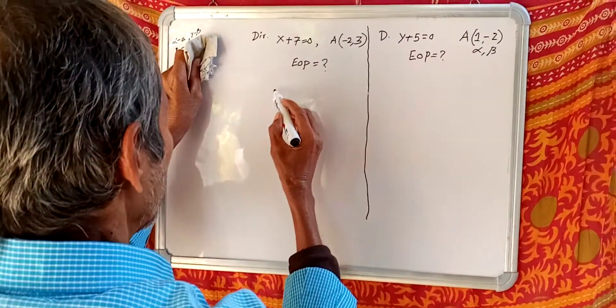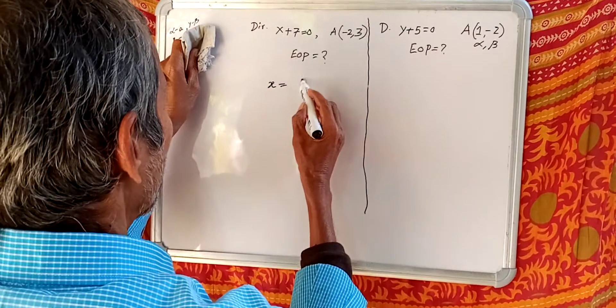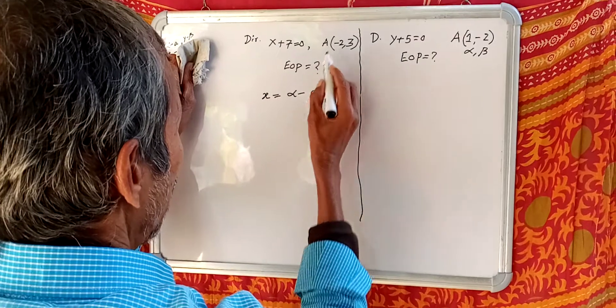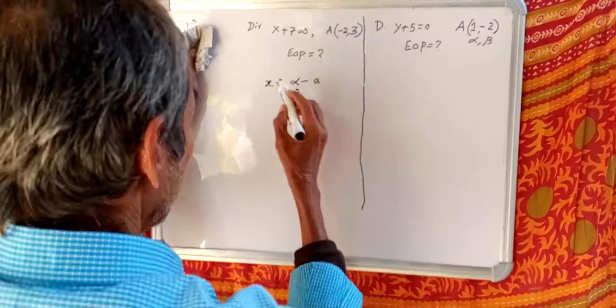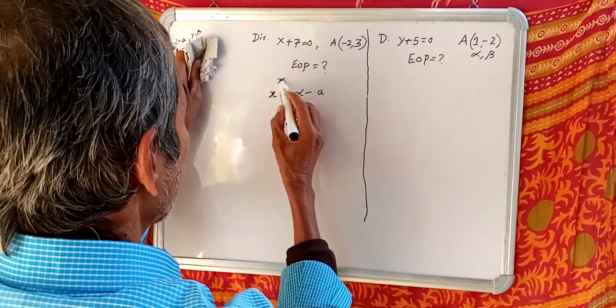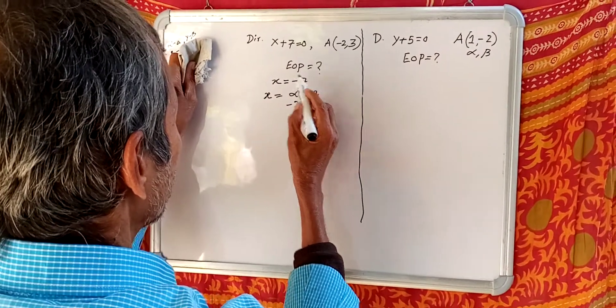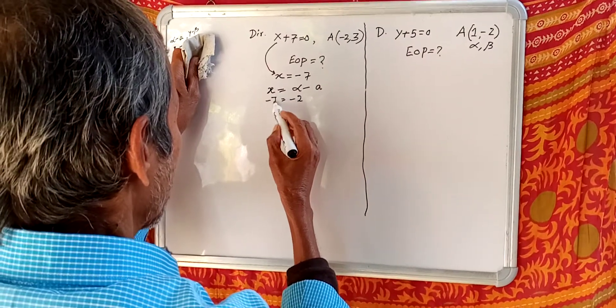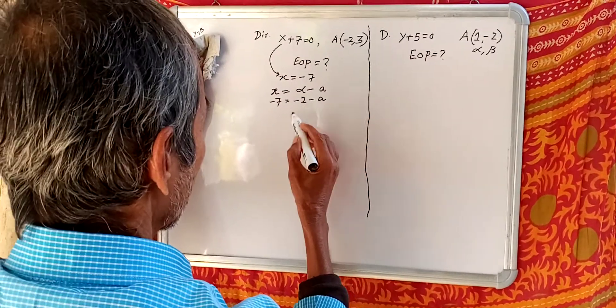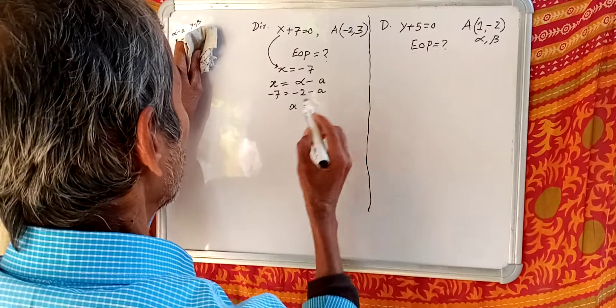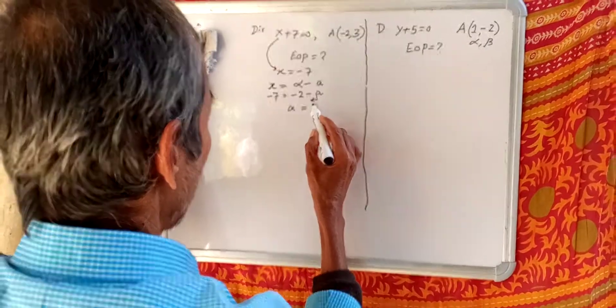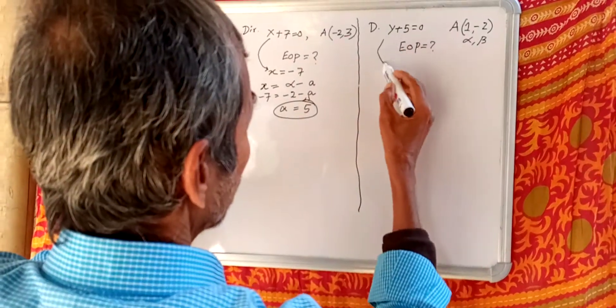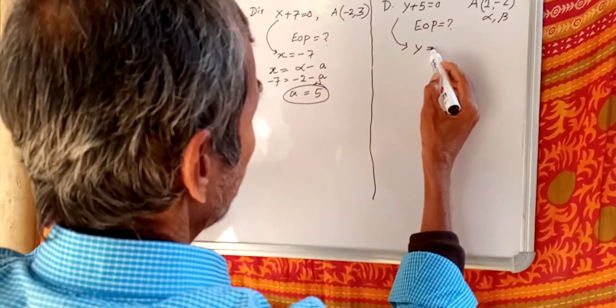Here X equals alpha minus A. Now alpha is minus 2, X is minus 7, therefore minus 7 minus A. A equals 5. Here Y equals minus 5.